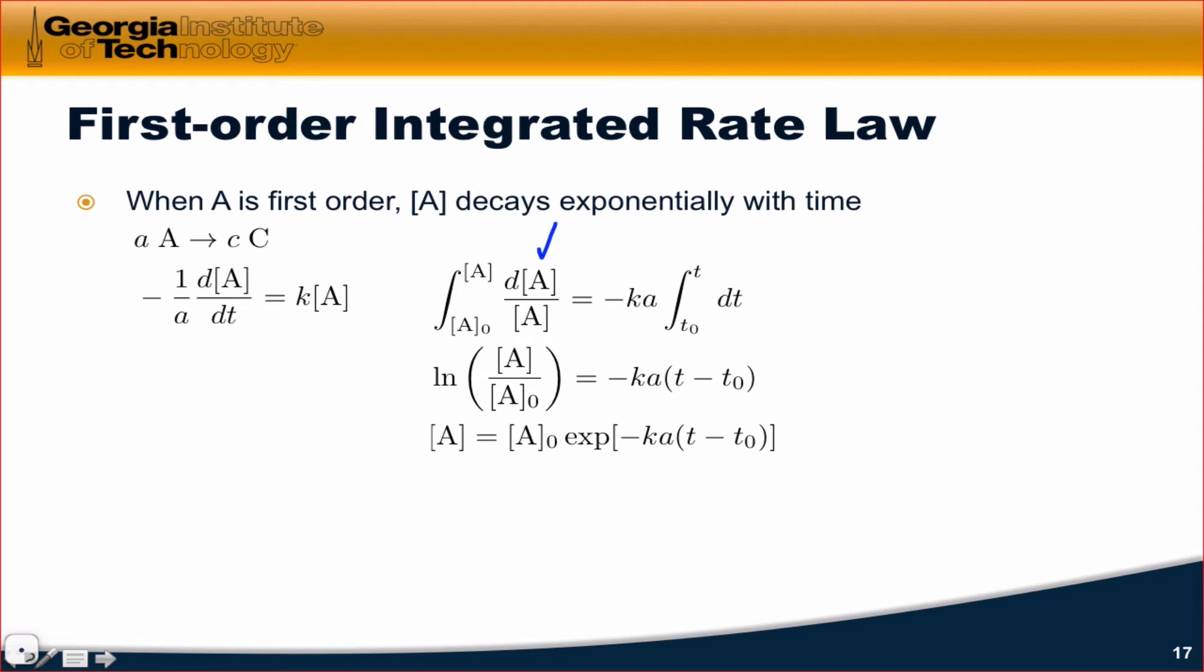When we do that, we get the integral of DA over A between the initial and final or concentration of interest. The integral of 1 over A dA is the natural log of A, and collecting both natural logs into a single natural log, we get that the natural log of A over A zero is equal to the right-hand side. Minus k and A are constants. We multiply both sides by negative A. That's why we got the negative A factor over here. And we integrate between T and T zero to get T minus T zero on the right.